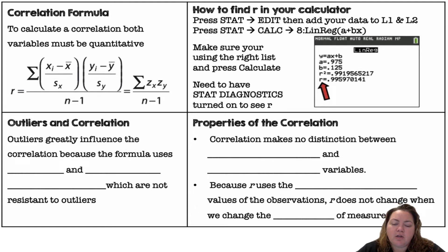How to find R in your calculator. Press stat, edit, and add your data into list 1 and list 2. Your x data goes in list 1, your y data goes in list 2. Then go to stat, calc, and pick option 8, linear regression a plus bx. Make sure you're using list 1 and list 2. You're looking for R, which is the correlation coefficient.